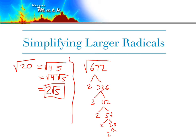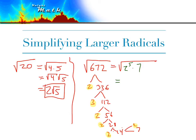Continuing the factor tree: 28 is 2 times 14, and 14 is 2 times 7. In the end, collecting all the prime factors, we have 2 times 3 times 2 times 2 times 2 times 2 — that's five 2s, giving us 2 to the 5th — and a single 7 left over.